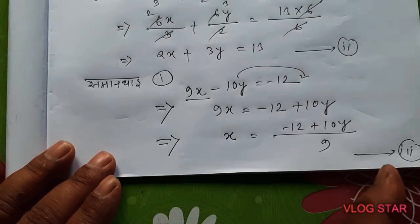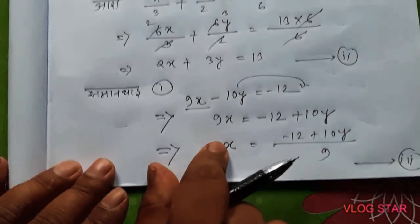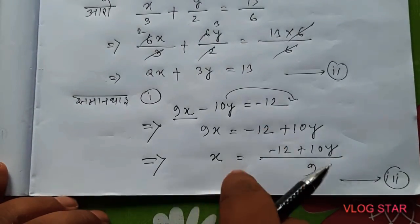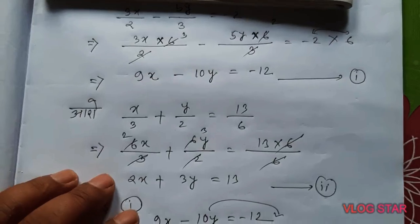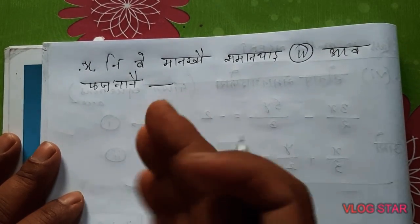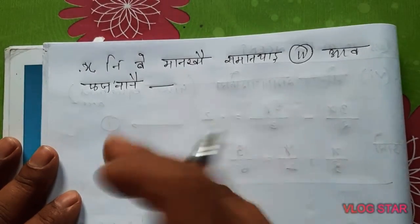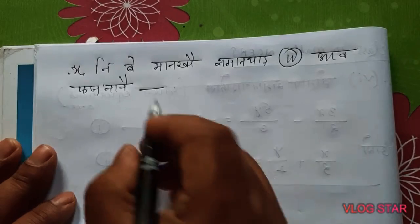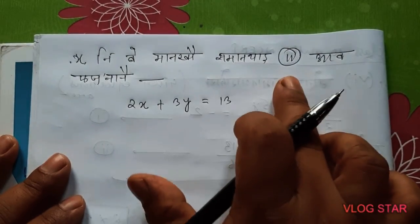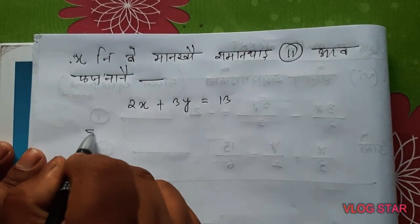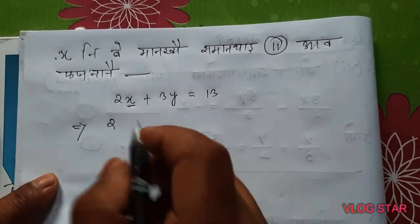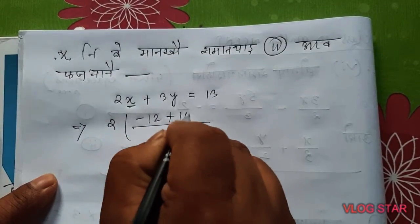We give this as equation number 3. Now you have to use this value of x in equation number 2. So you have to substitute the value of x in equation number 2. Let's write this value of x in equation number 2. This value of x from equation number 1 is equal to x in equation number 2. Let's write 2x in the equation: 10y divided by 9.